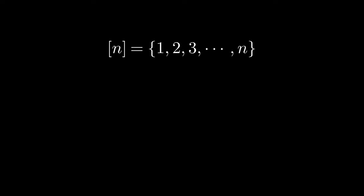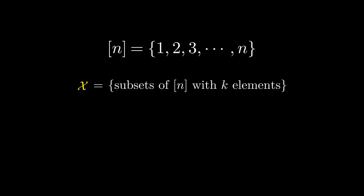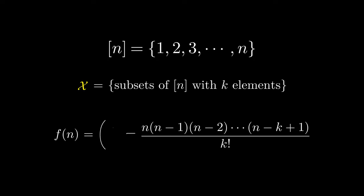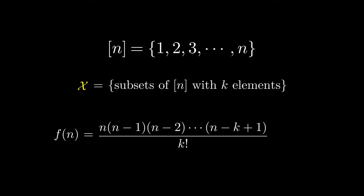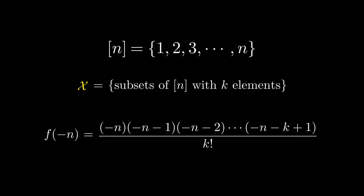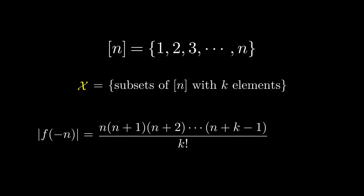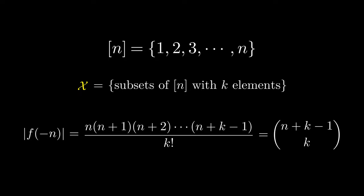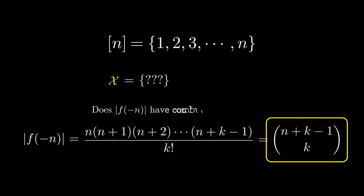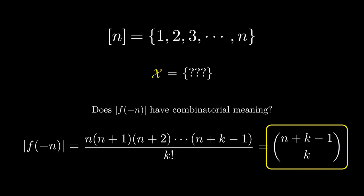Let's generalize to subsets of n with k elements. Here is our new f of n. By plugging in a negative n, it's clearly possible we could get a negative result, so let's additionally only consider the absolute value of our result. This seems like cheating, but we can't count a negative number of things, so this is necessary to get something coherent as a counting problem. This is the function that we get now, which happens to be equal to this. This seems to be a coherent expression now, but what combinatorial class would it be counting?